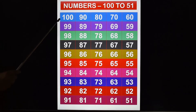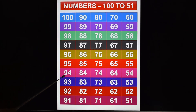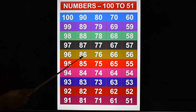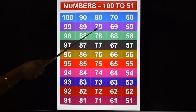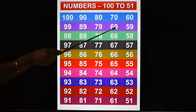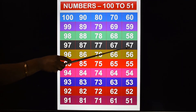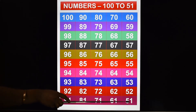Let's repeat once again. Don't forget children — count backward. Remember, always count backward: 100, 99, 98, 97, 96, 95, 94, 93, 92, 91. Next: 90, 89, 88, 87, 86, 85, 84, 83, 82, 81. Then 80, 79, 78, 77, 76, 75, 74, 73, 72, 71. Then 70, 69, 68, 67, 66, 65, 64, 63, 62, 61. Then 60, 59, 58, 57, 56, 55, 54, 53, 52, 51.